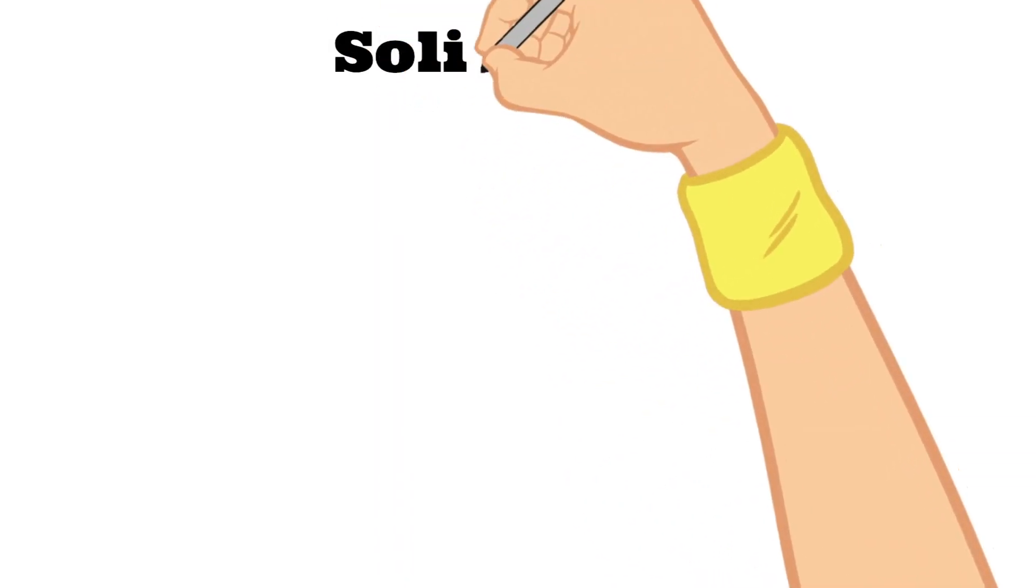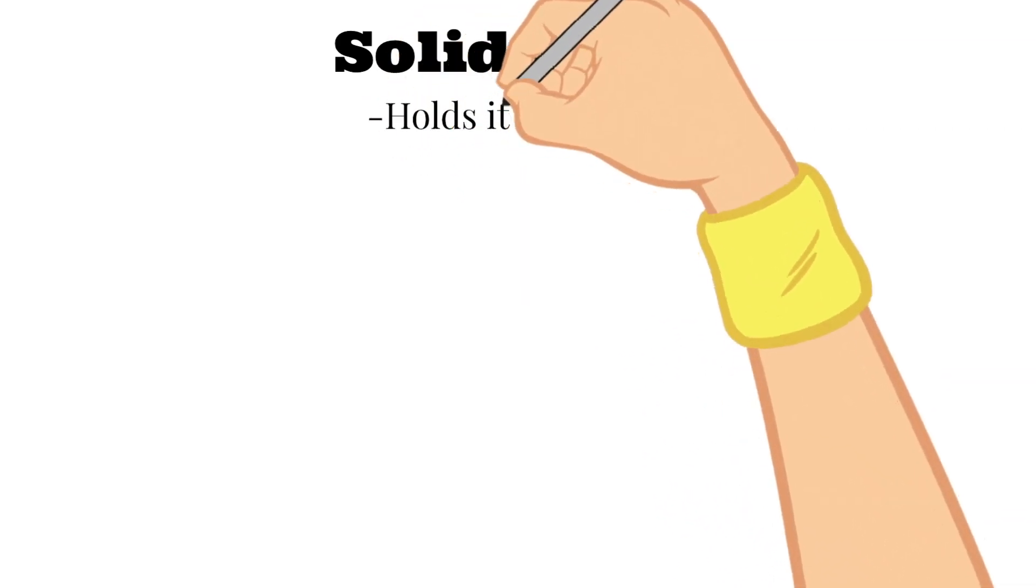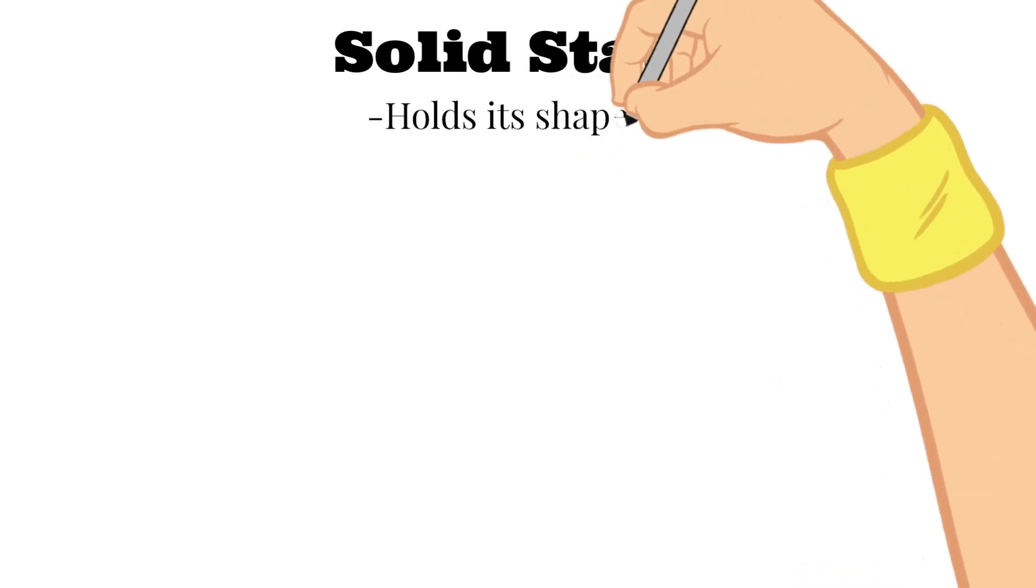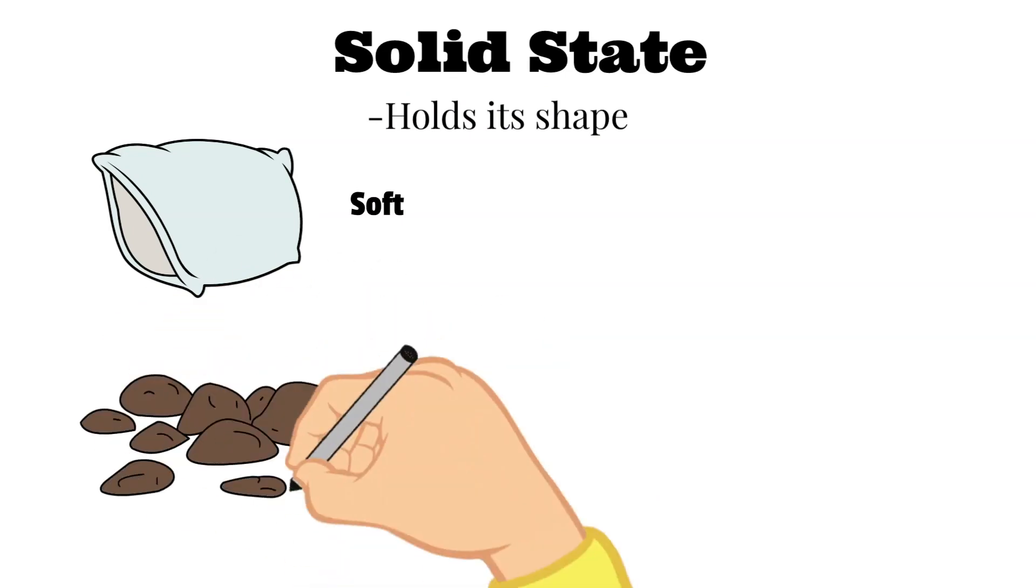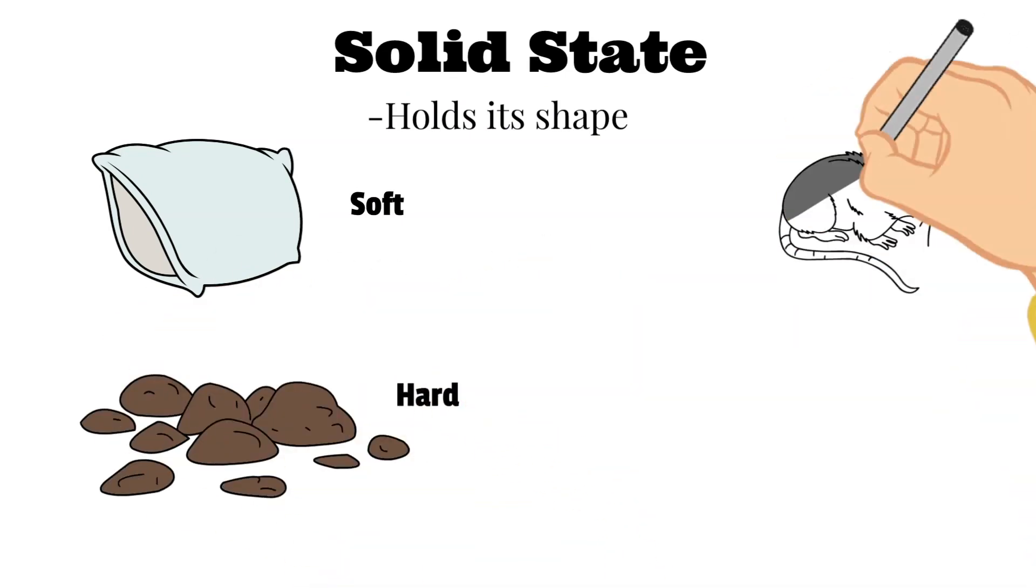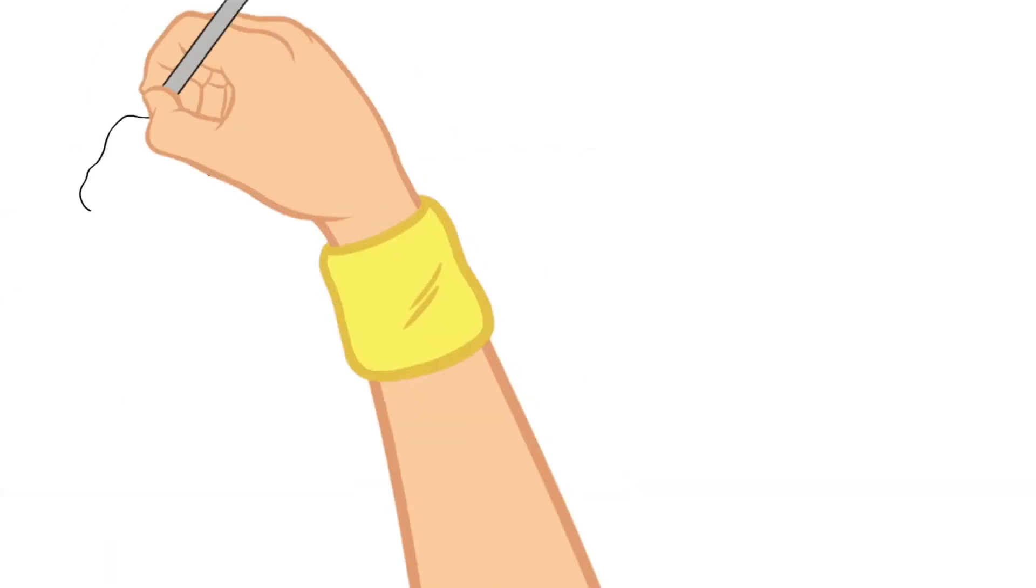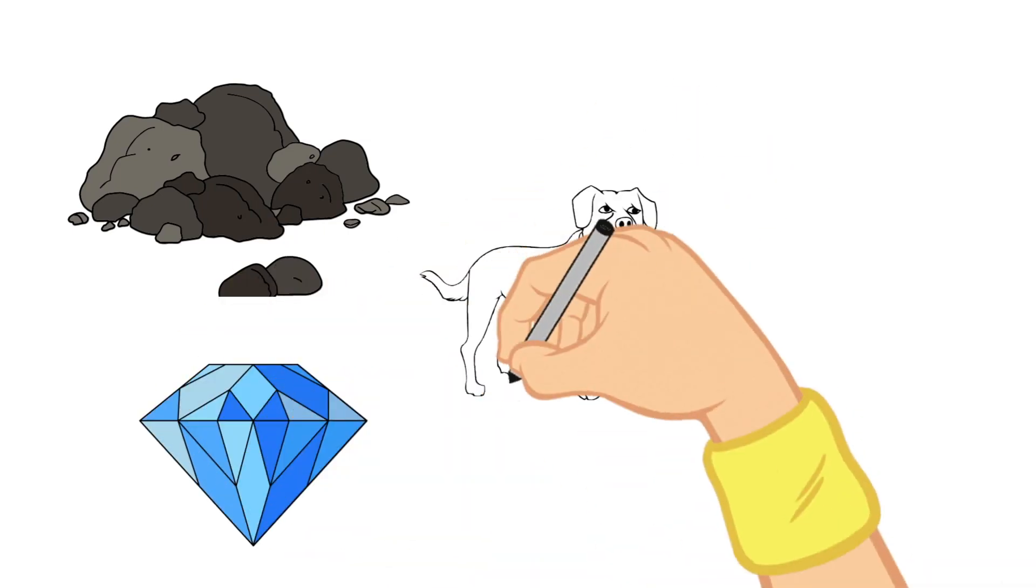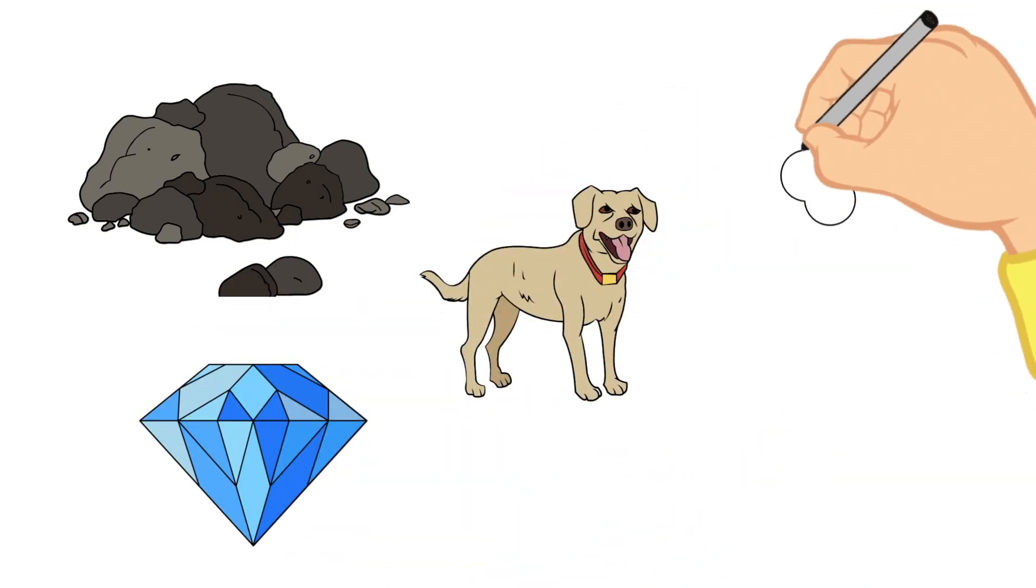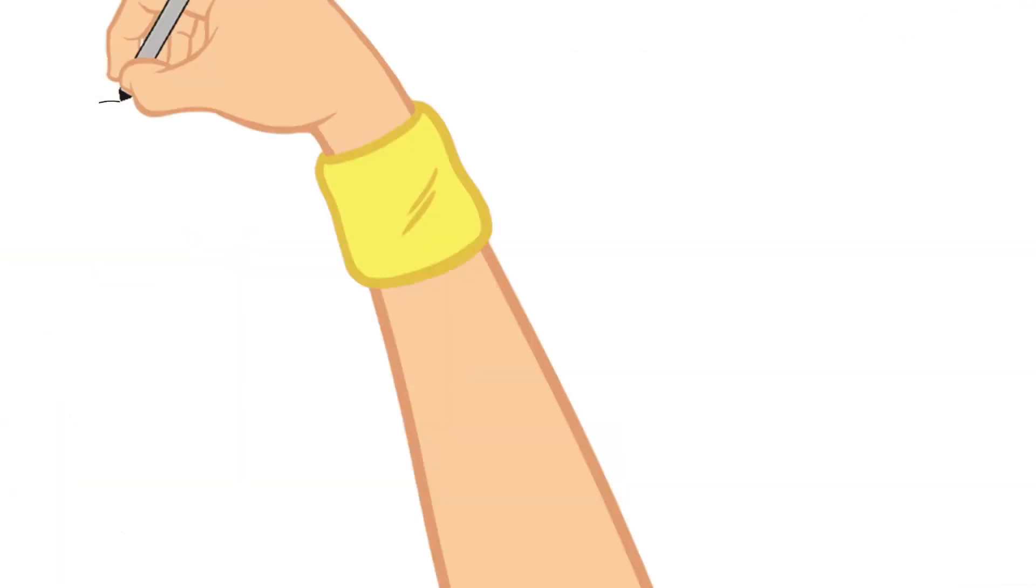Our first state of matter that we're going to discuss is the solid state. The main characteristic of a solid is that it is anything that holds its shape. This can include things that are soft or hard or small or big. Some examples include rocks, diamonds, fur on animals, bones, wood, etc. It just has to hold its shape.